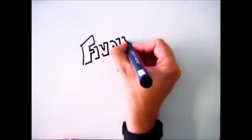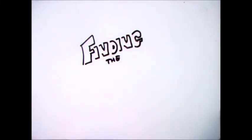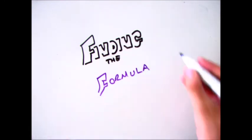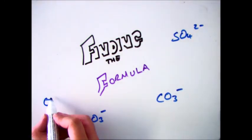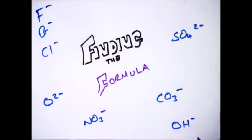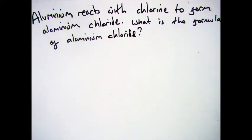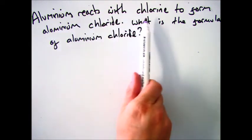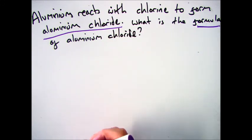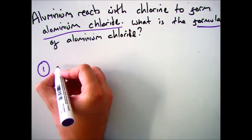Hello there and welcome to this video which is going to be focusing on finding out the chemical formula of ionic compounds when you are given the charge of the anion and the cation. So in an exam you might get a question such as aluminum reacts with chlorine to form aluminum chloride. What is the formula of aluminum chloride?